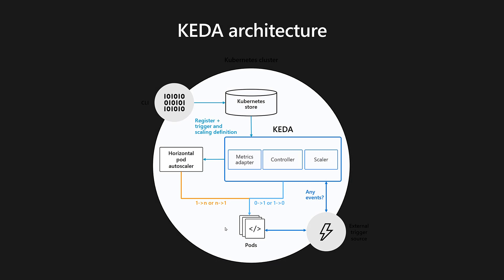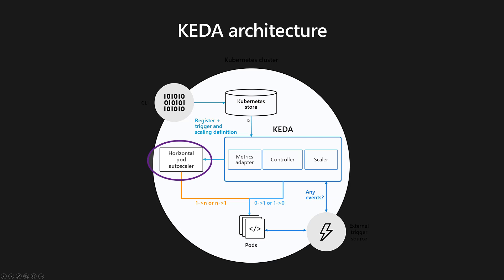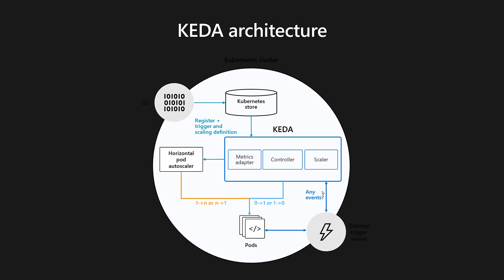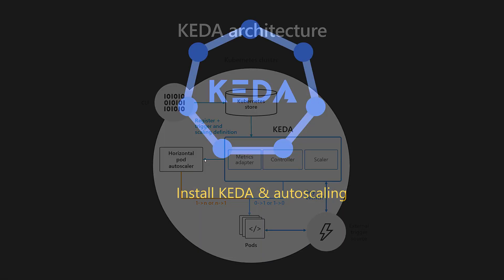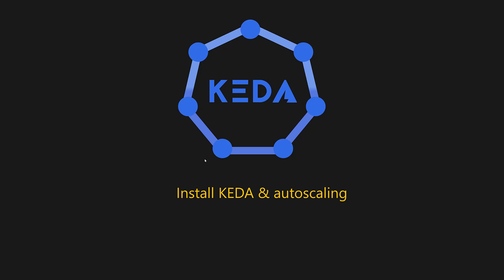Let's look at the KEDA architecture. KEDA provides a metrics adapter, controller, and what is called a scaler. It registers with the existing Kubernetes store and creates a Horizontal Pod Autoscaler behind the scenes. It also registers with the event source, monitors the number of available events and the existing number of consumers, and uses that information to horizontally scale the pods.